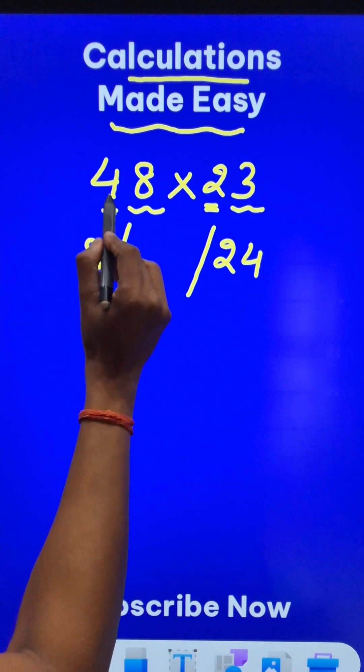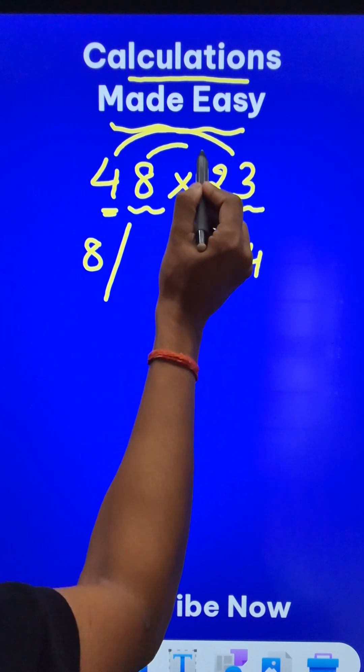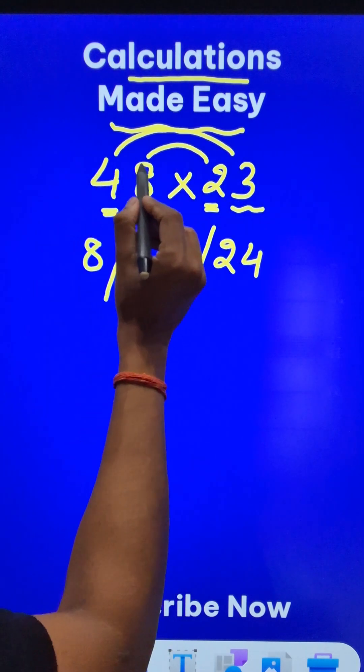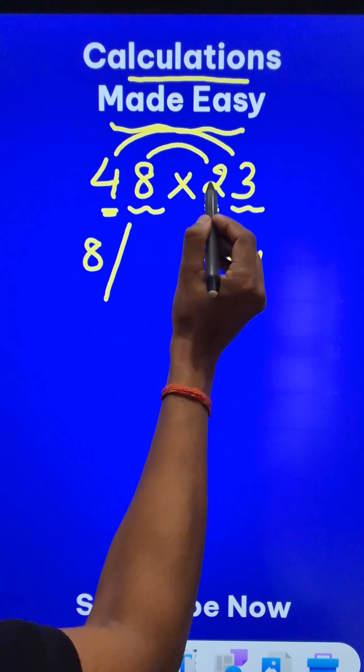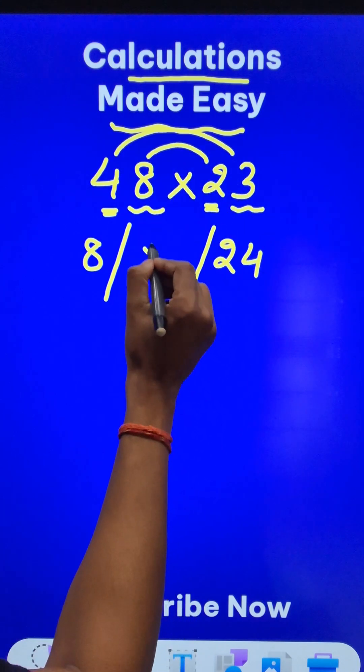Now, we will interchange. 4 will be multiplied by 3 and 8 will be multiplied by 2. So this will be 12 and this will be 16. And when you add them, you get 28.